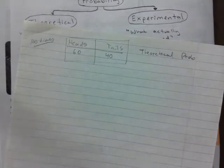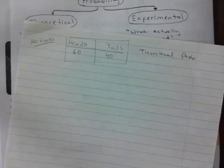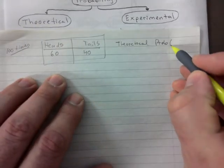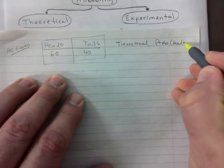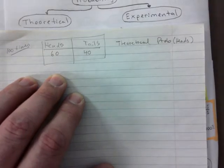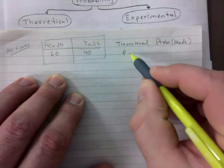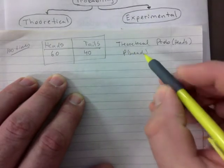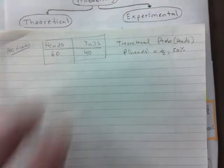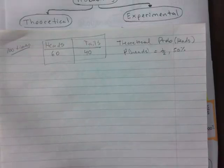Now let me ask you: the theoretical probability of the coin landing on heads — what would that be? Fifty-fifty, one out of two. Everybody should know that. The probability of heads is one out of two, or fifty percent. That's a fact — that's the most basic example I can give you.